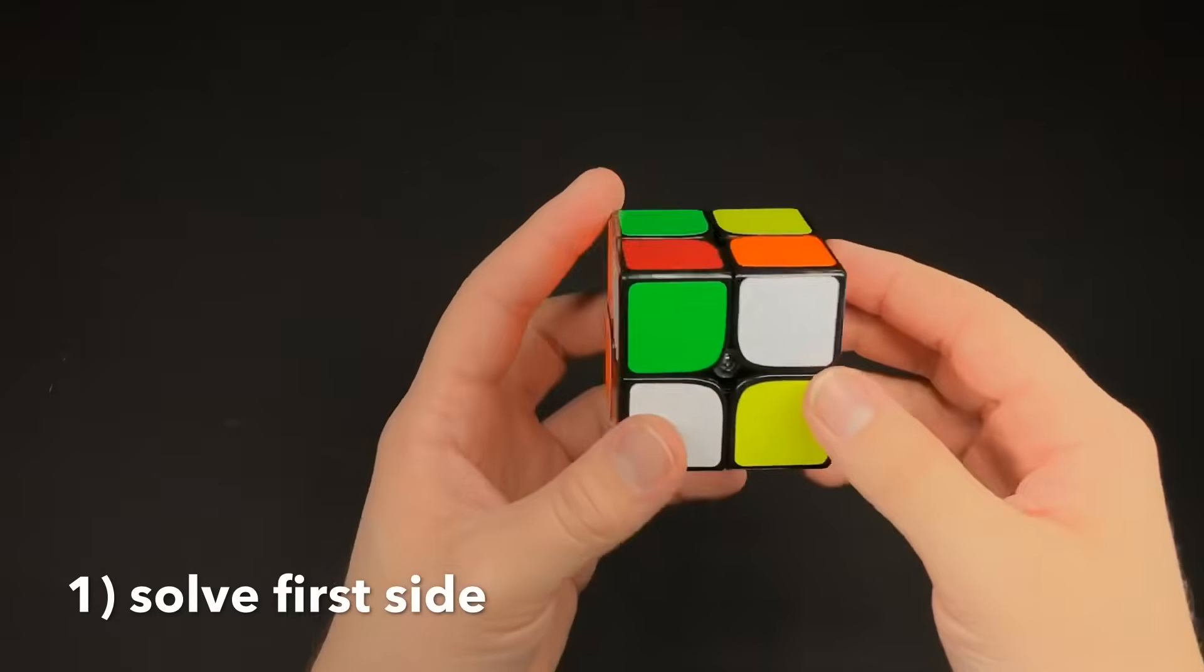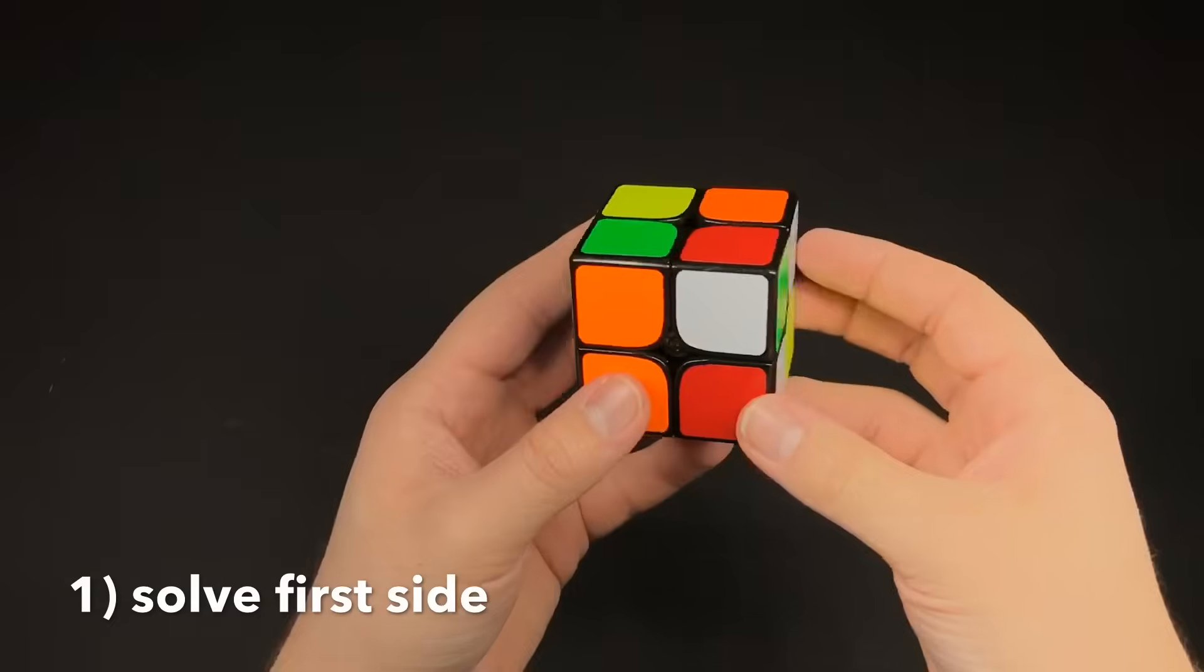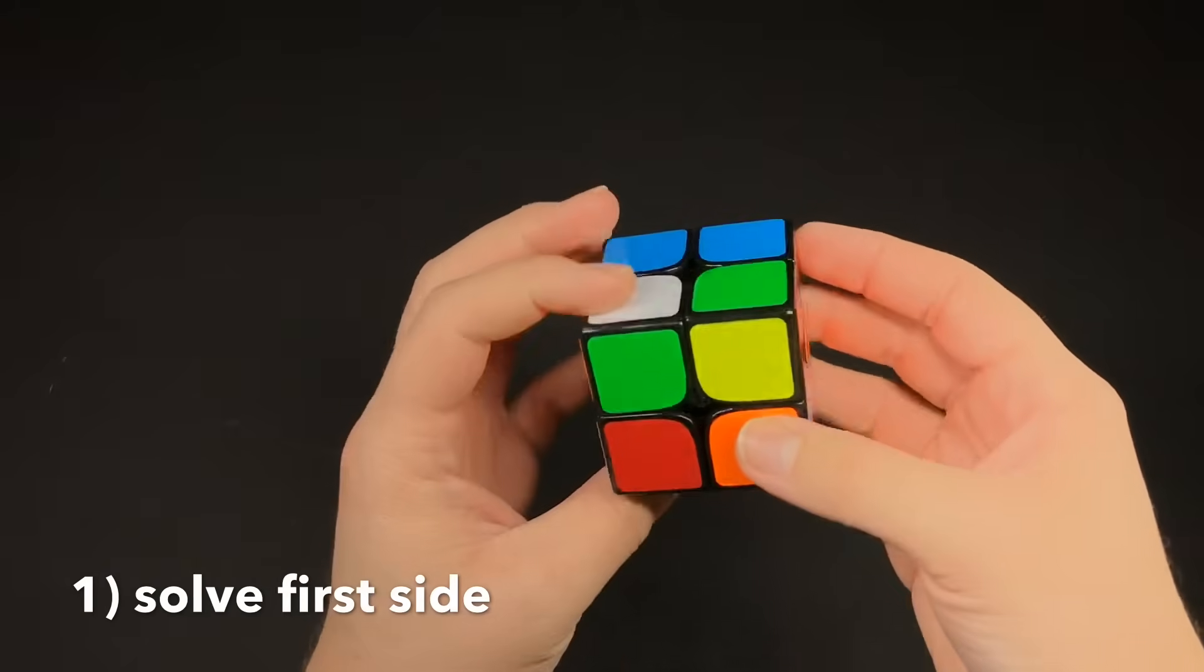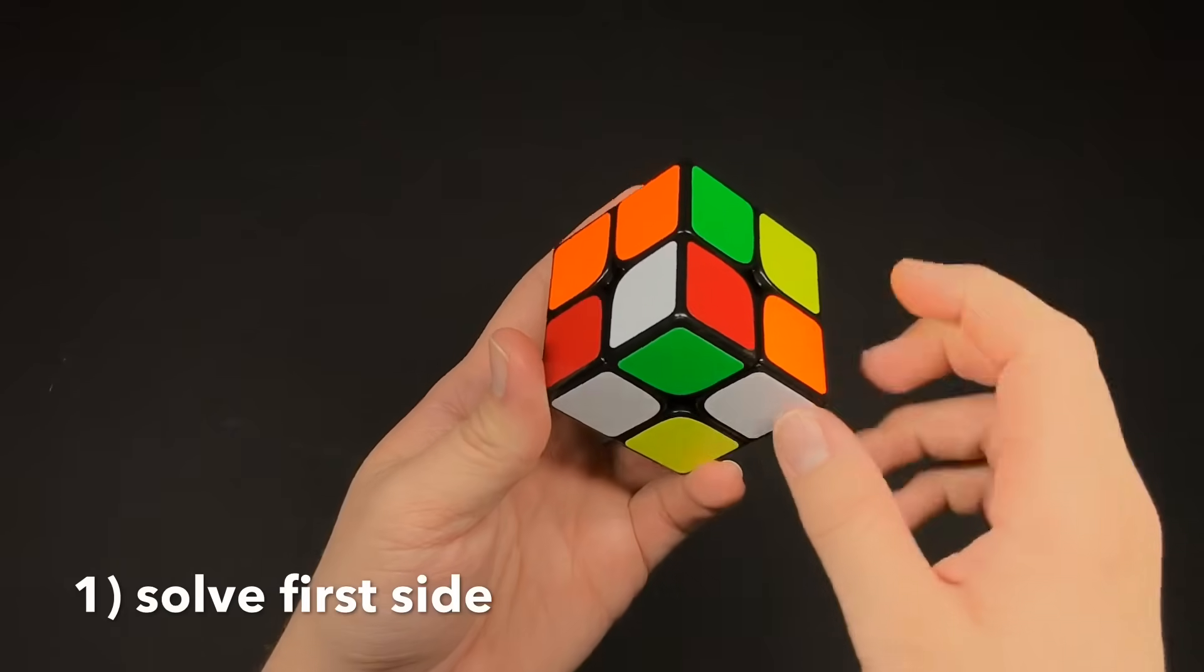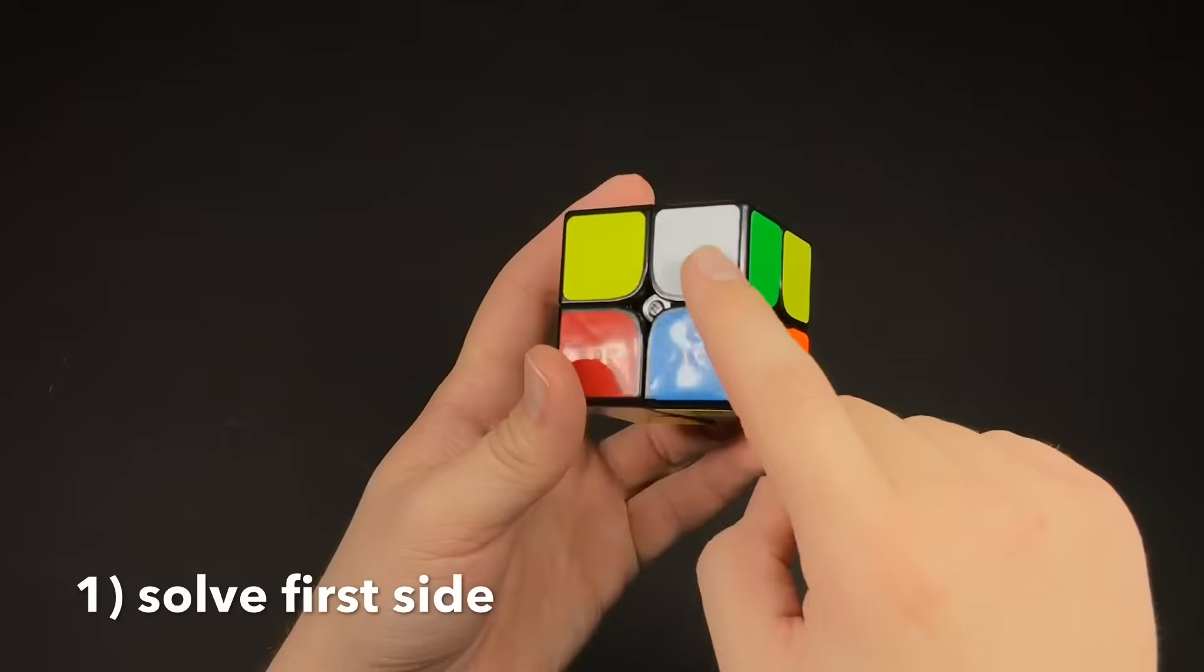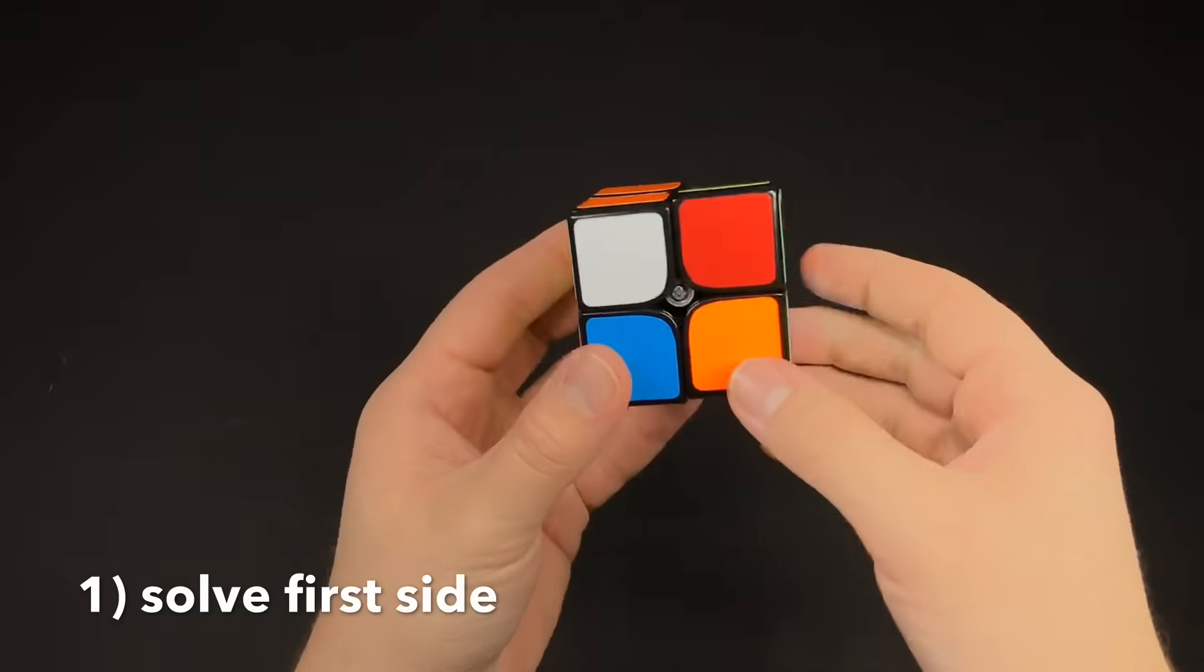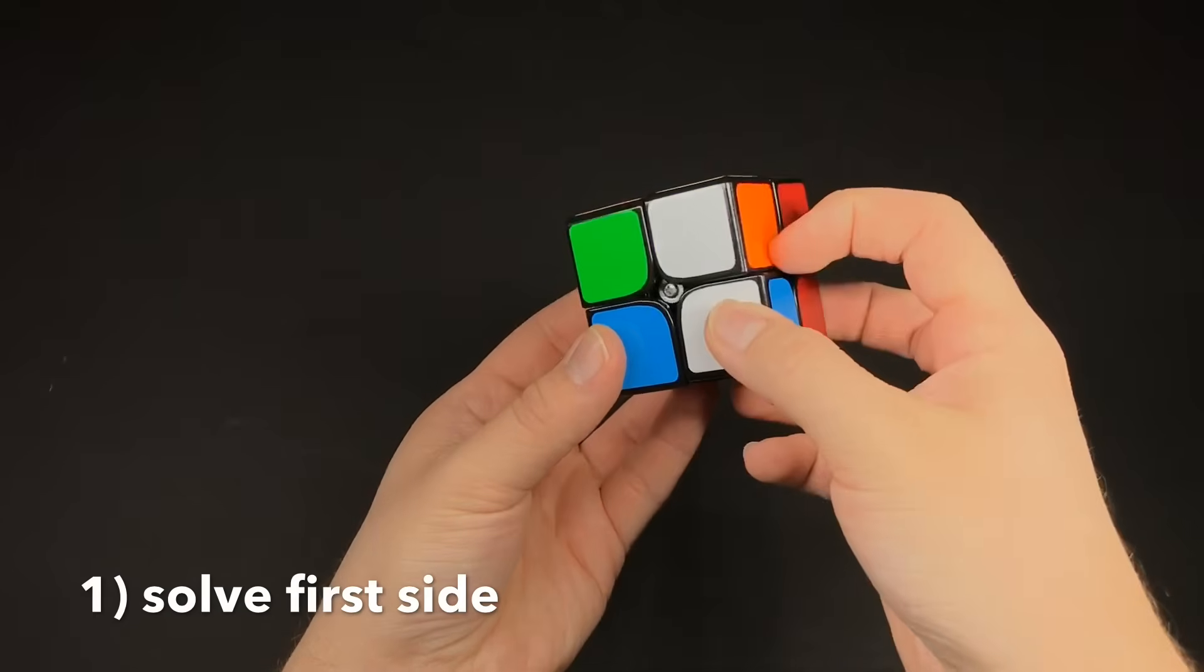There's a bunch of ways to get the first side and mainly it's going to be intuitive. You can try and figure out how to get the white side on your own. But say I have these two and I have this piece right here. I can take this piece out and then insert it like this. And then all I have left is this one which I can insert like that.